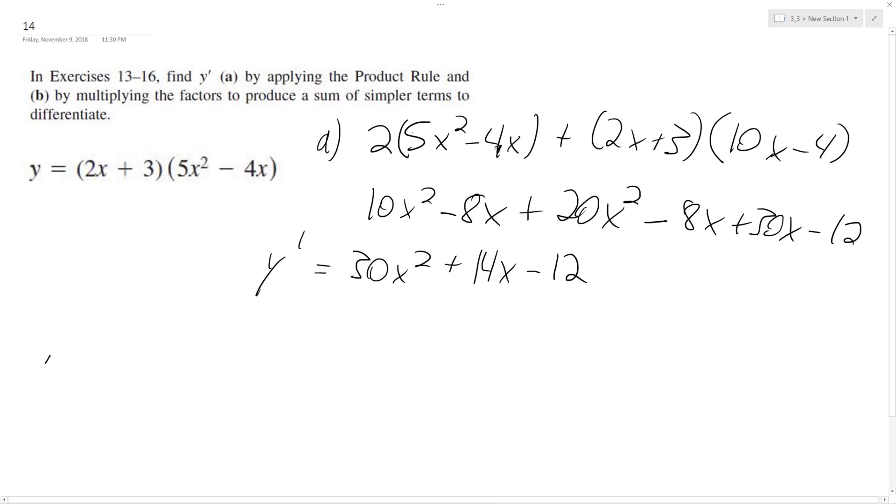So the second part is to FOIL everything out. So y is the same thing as 10x squared minus 8x plus 15x squared minus 12x, which is equal to 10x, actually 25x squared minus...